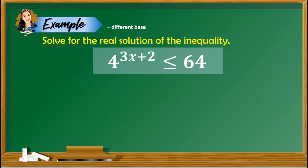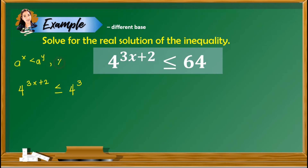Item number 2: solve for the real solution of 4 raised to 3x plus 2 is less than or equal to 64. The bases are different, so the first thing we need to do is make the bases the same. We change 64 to 4 raised to the power of 3. So we now have 4 raised to 3x plus 2 is less than or equal to 4 raised to 3. Now that the bases are the same and a is greater than 1, we apply the property: 3x plus 2 is less than or equal to 3.